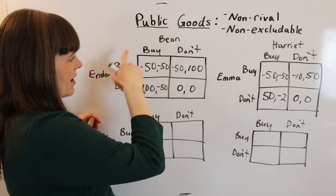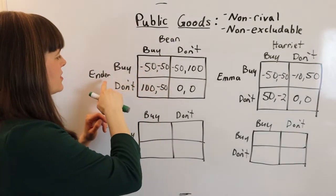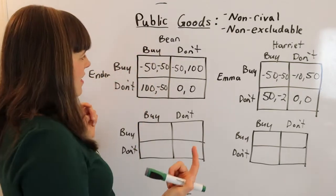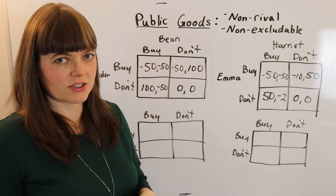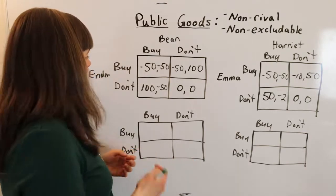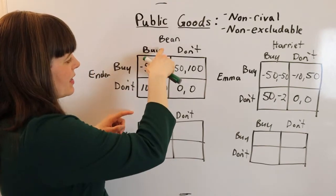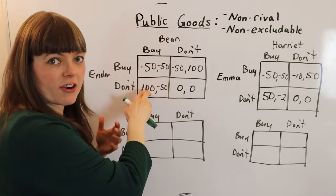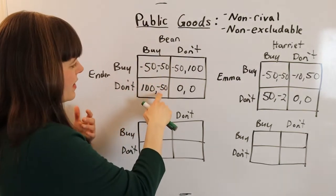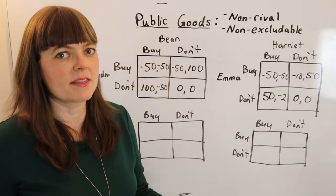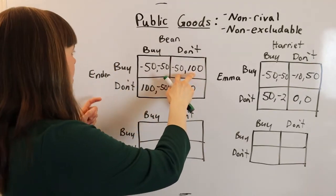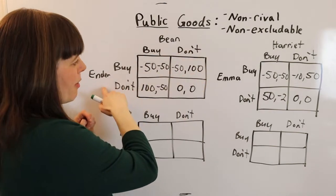This is a Game Theory Matrix that represents that situation. We have Ender and Bean who are roommates. If they both buy the TV, they both get negative 50 utils because they both spent a lot of money and they're duplicating the TV. If Bean buys the TV and Ender is the free rider, Ender gets 100 utils and Bean gets negative 50.